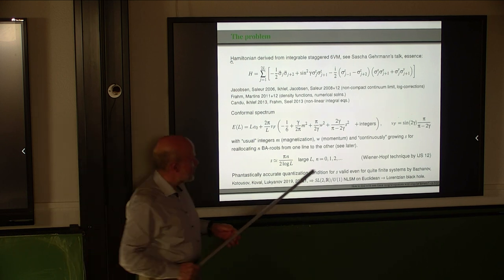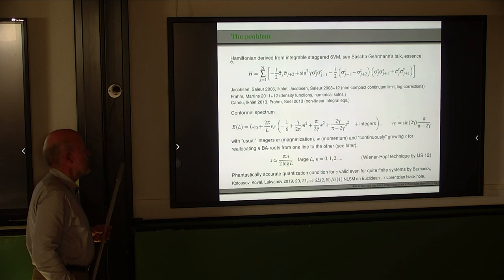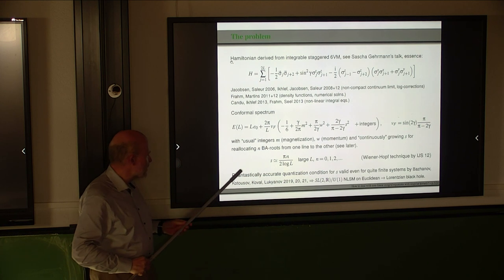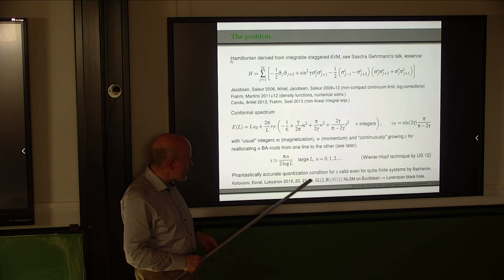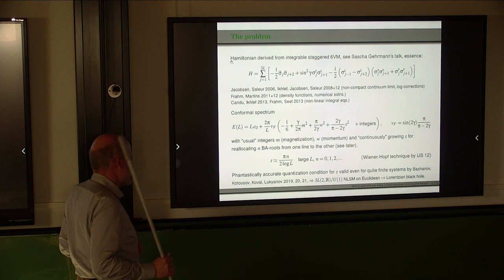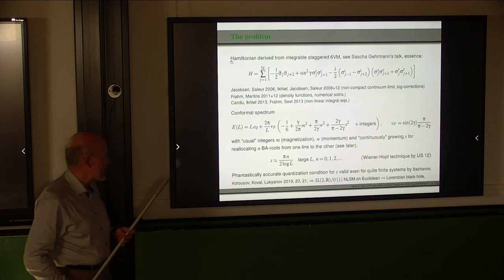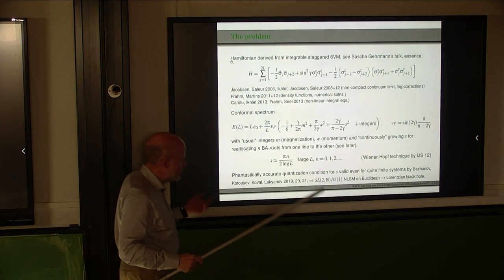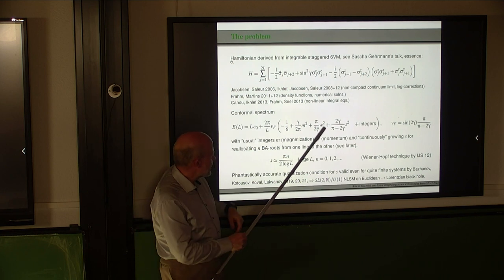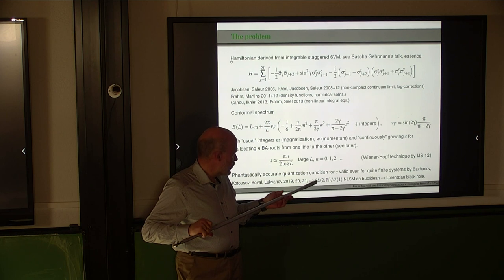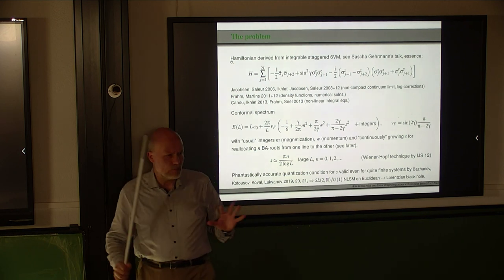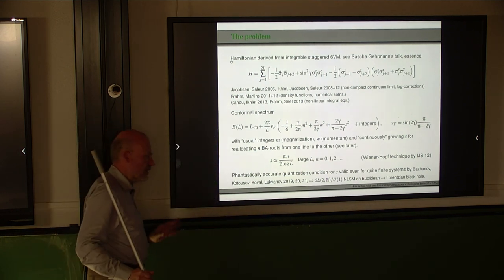That behavior was derived by Ikhlef, Jacobsen, and Saleur. And in 2019, a fantastically accurate quantization condition for S — even for relatively short chains — was derived by Bazhanov, Kotousov, and Lukyanov. The entire picture we have today is that the density of states in this model corresponds not to a nonlinear sigma model on a Euclidean black hole, but on a Lorentzian black hole. Sascha Germann said enough about that.